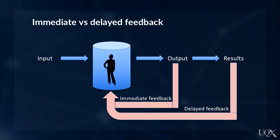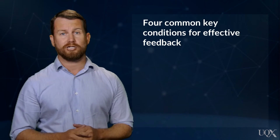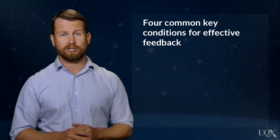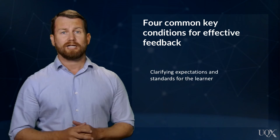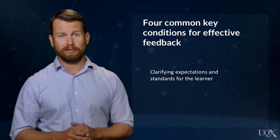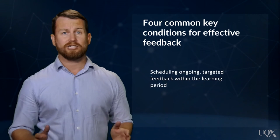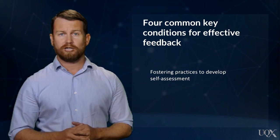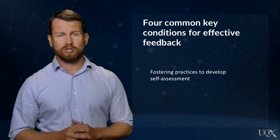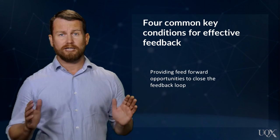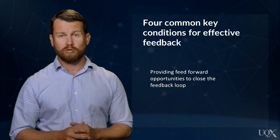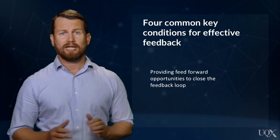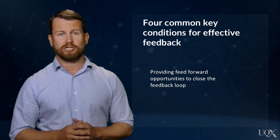This is of course dependent upon the type of task and the developmental capability of the learner. Four common key conditions for effective feedback are evident from research: firstly, clarifying expectations and standards for the learner; secondly, scheduling ongoing targeted feedback within the learning period; thirdly, fostering practices to develop self-assessment; and finally, providing feedforward opportunities to close the feedback loop. Let's have a look at each of these conditions in more detail.